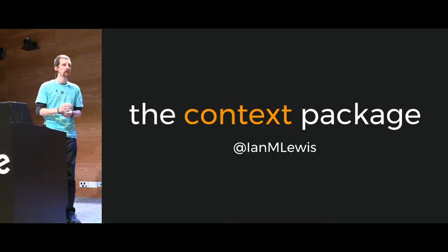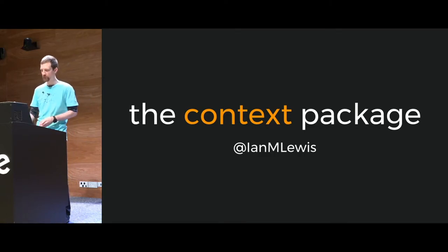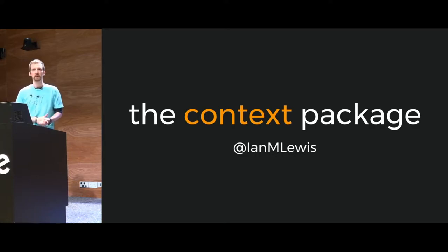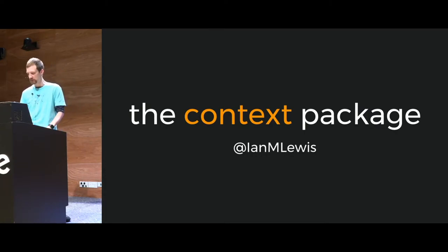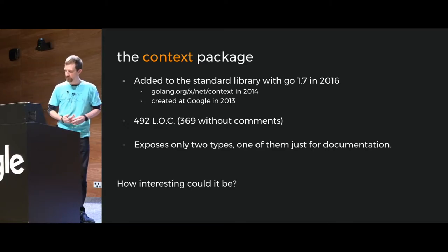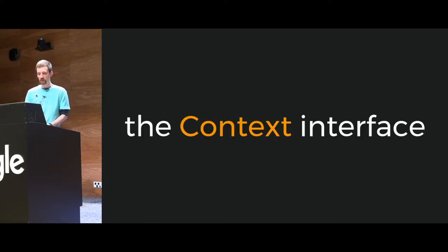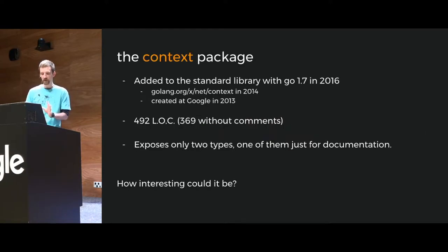The way to do that is to use the context package. The context package is a very important package — I believe it was added to the standard library in 1.7 in 2016. Before that it lived as a semi-standard package in the golang.org/x directory. It's about 370 lines without comments, a fairly simple package, but extremely important. Inside it only exposes one interface and several functions.